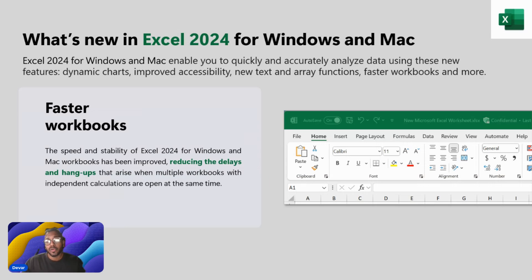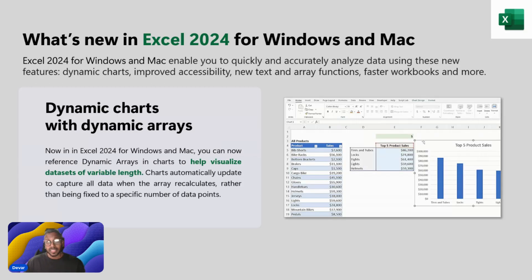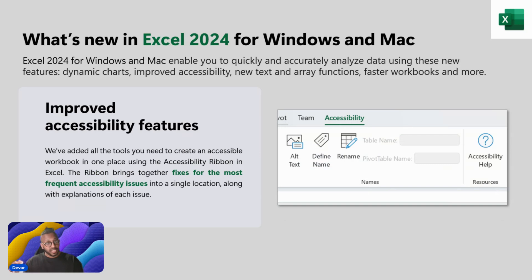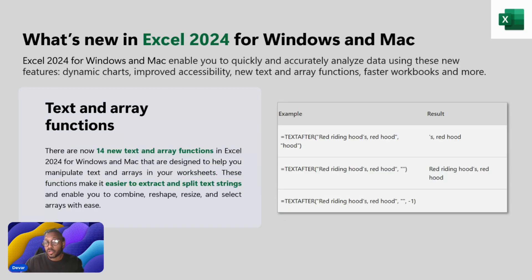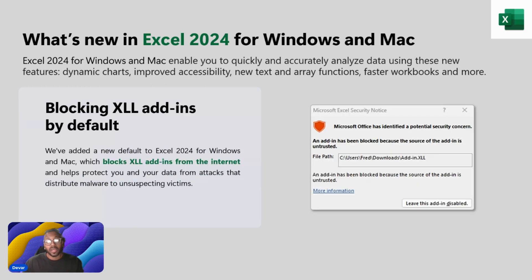What about Excel? There are a few new features for Excel users. You get faster workbooks — everything loads much faster with fewer delays. You get dynamic charts with dynamic arrays, which was previously only in Microsoft 365 and now available in Office 2024. Improved accessibility features, same as mentioned. Text and array functions — so it's easier to extract and split text strings. Blocking XLL add-ins by default, so you don't have to do this as an extra step. And there's also a new image function and a new Lambda function.